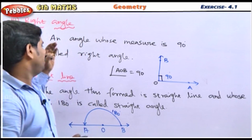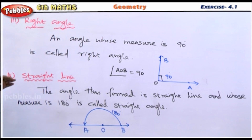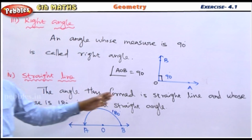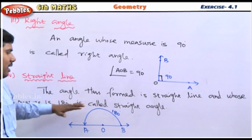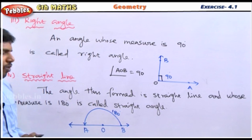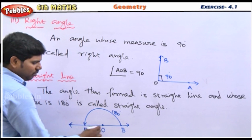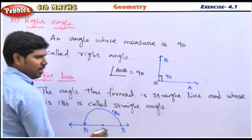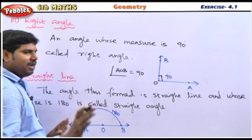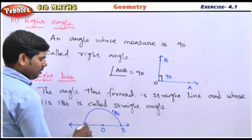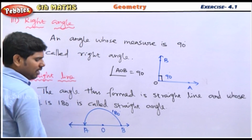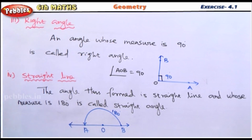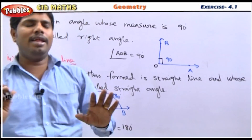The fourth type is the straight angle. The angle formed as a straight line whose measure is 180 degrees is called a straight angle. AOB is a straight line. A straight line angle is 180 degrees, and a right angle is 90 degrees.